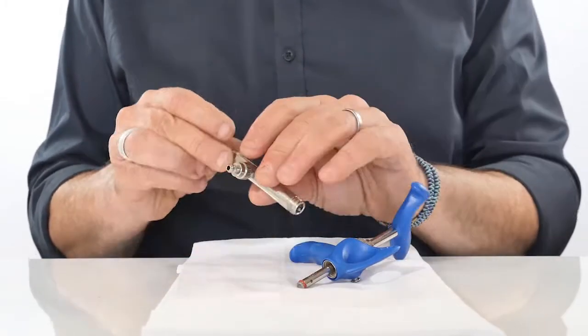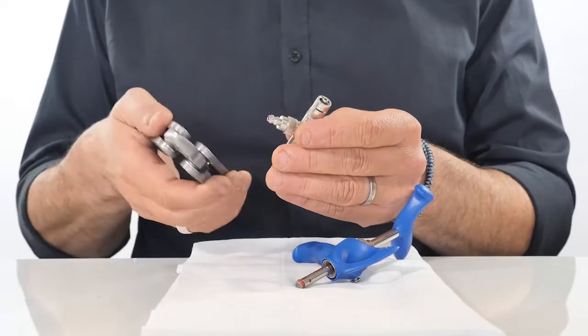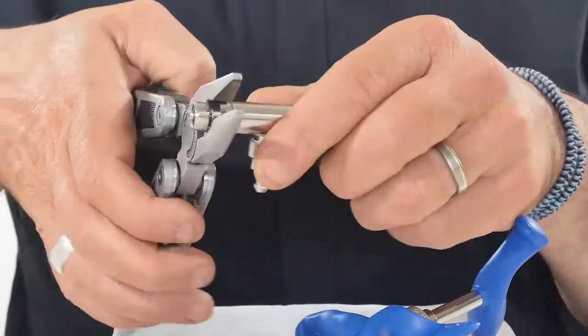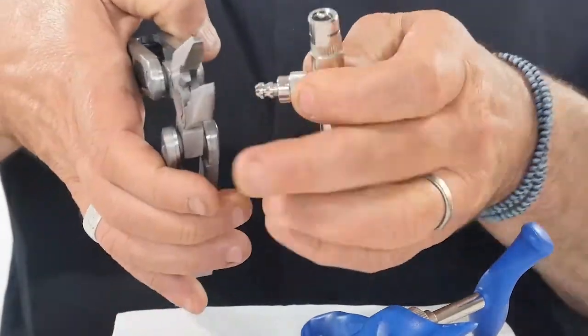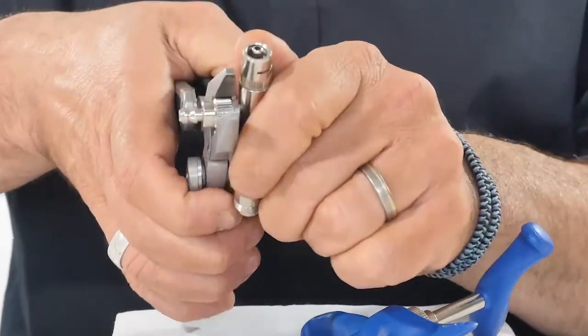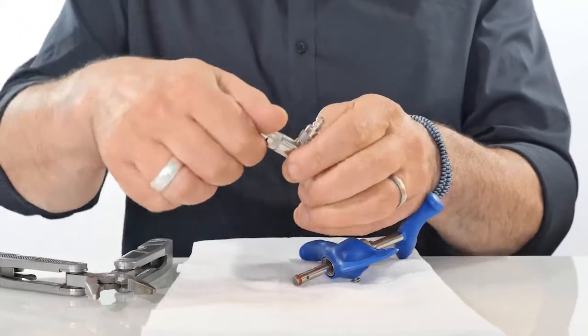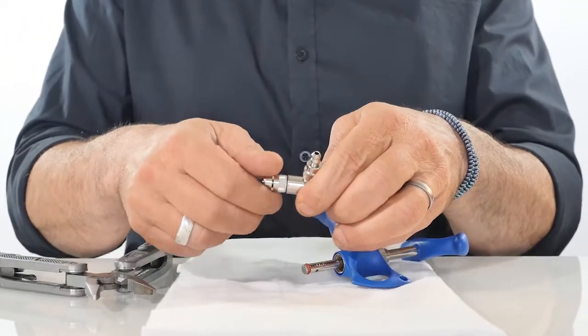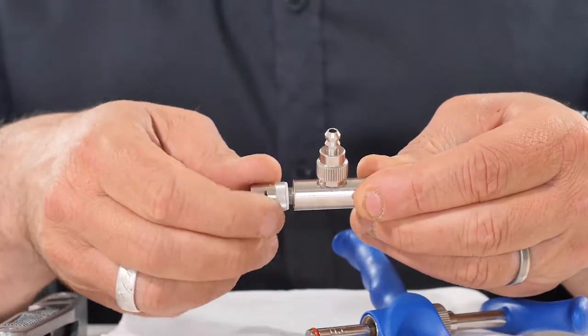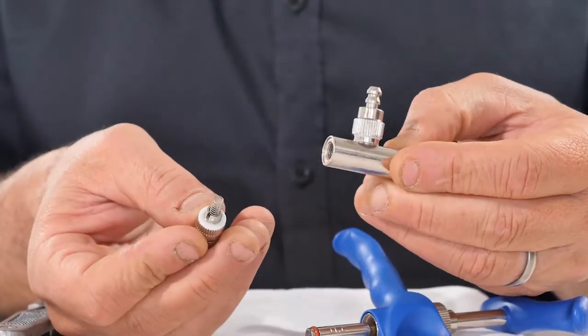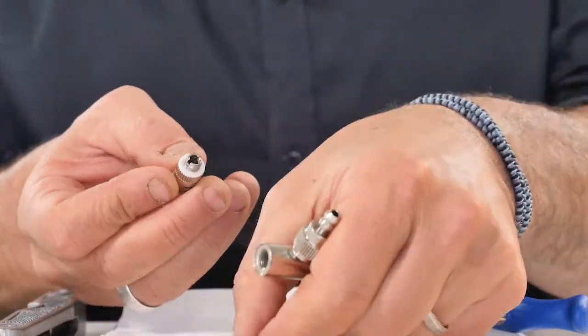Open the syringe body using pliers. Open the luer lock and the tubing valve housing. Take the valve spring and valve stainless steel ball out.